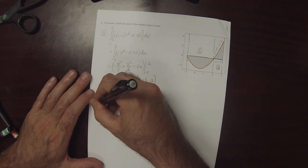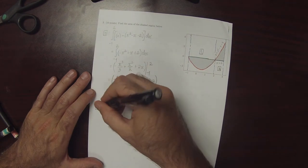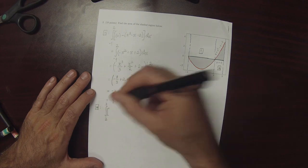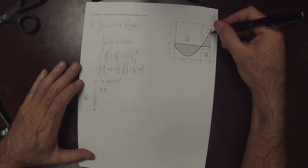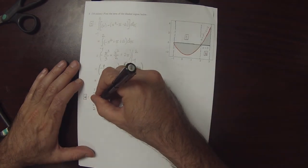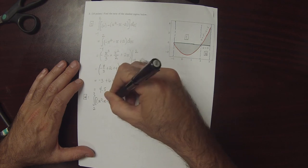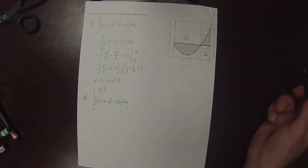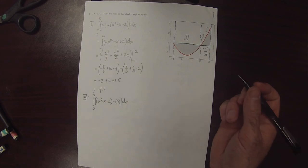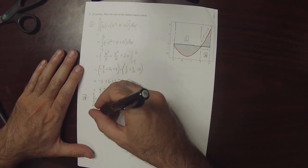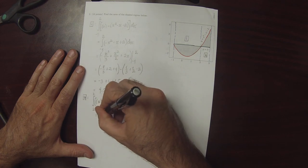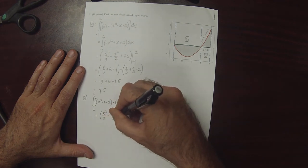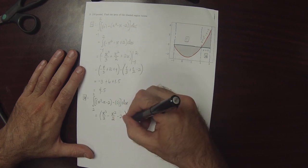The second region's area is given by the integral from 2 to 3. We need red minus green, since red is above green, so this is x squared minus x minus 2 minus 0 dx. Using the fundamental theorem, the antiderivative is x cubed over 3 minus x squared over 2 minus 2x, evaluated from 2 to 3.